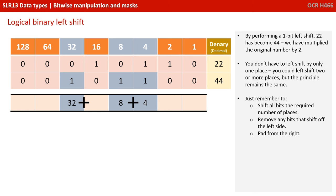You don't just have to shift by one bit. You could shift by two bits or more. The principle is the same: the bits are going to disappear off the left-hand side, they're going to get padded on the right-hand side, and any in the middle are going to be shifted over that number of places.